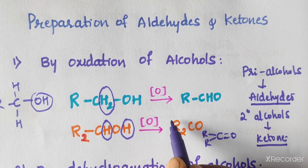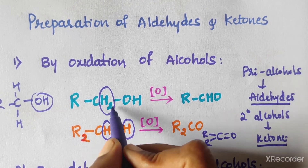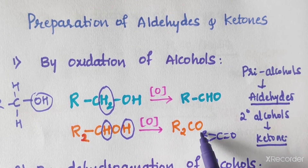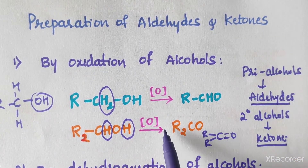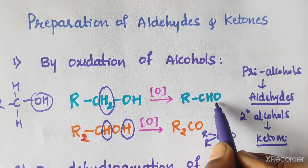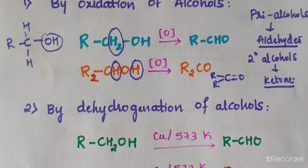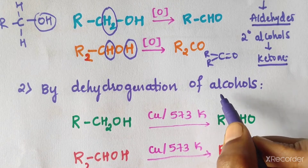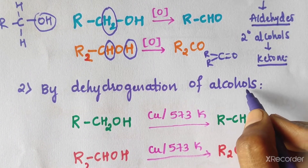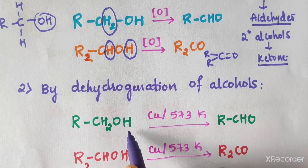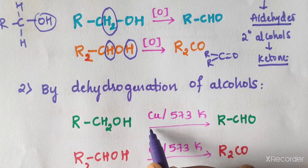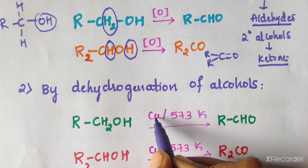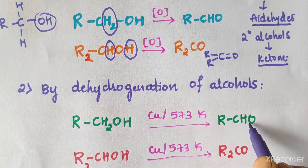By using an oxidizing agent like CrO3, primary alcohol gives aldehydes and secondary alcohol gives ketones. This is the preparation of aldehydes and ketones by oxidation of alcohols. The second method is by dehydrogenation of alcohols.